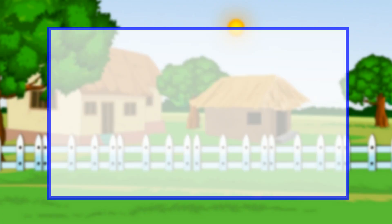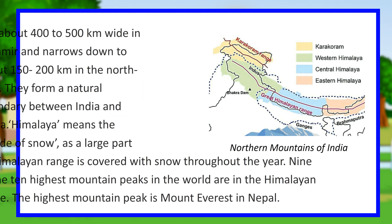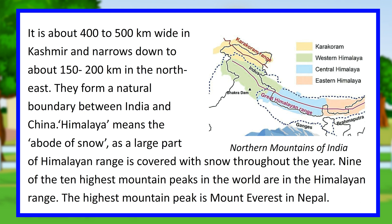The northern mountains stretch across the northern boundary of our country. They include the Karakoram Range, the Ladakh Range, and the Himalayan Range. These are the highest mountain ranges in the world. The Himalayas stretch in a long curve for 2,500 kilometers from Jammu and Kashmir in the north to Arunachal Pradesh in the northeast. They are about 400 to 500 kilometers wide in Kashmir and narrow down to about 150-200 kilometers in the northeast, forming a natural boundary between India and China.